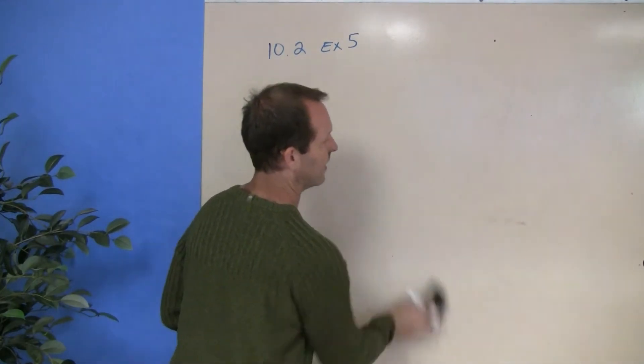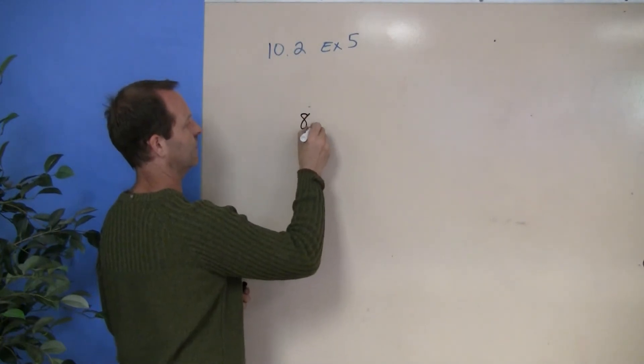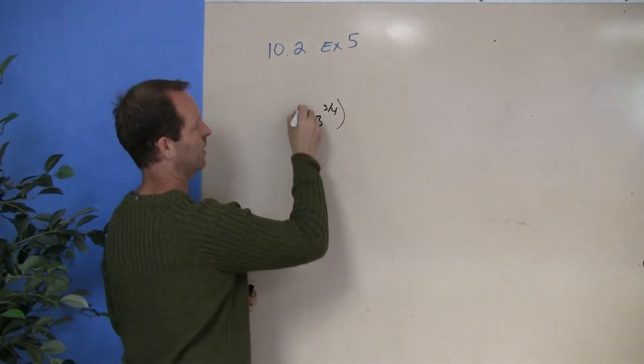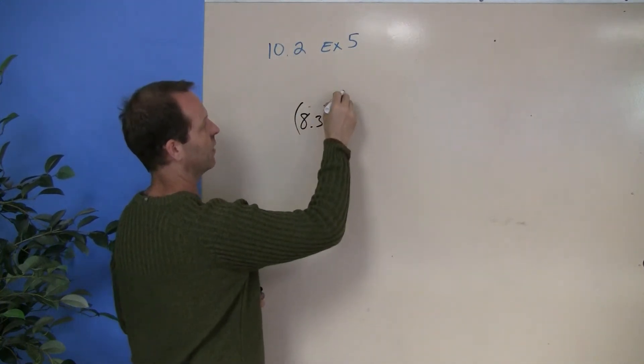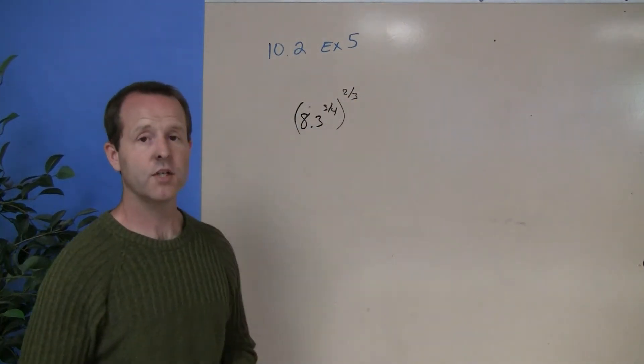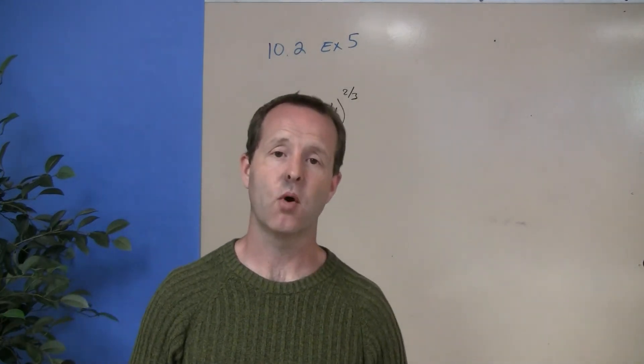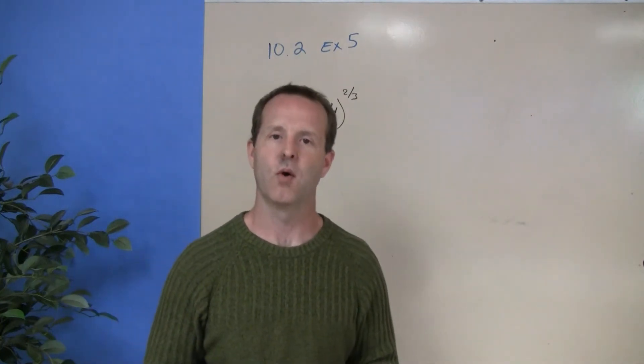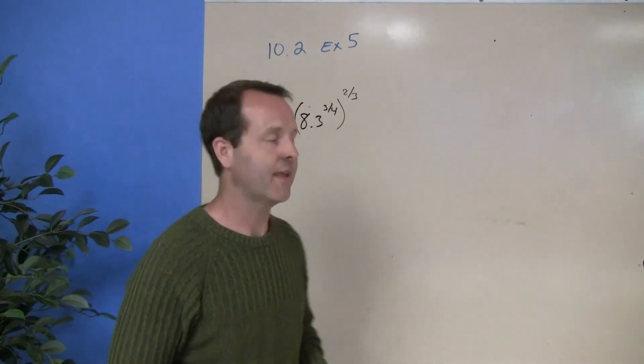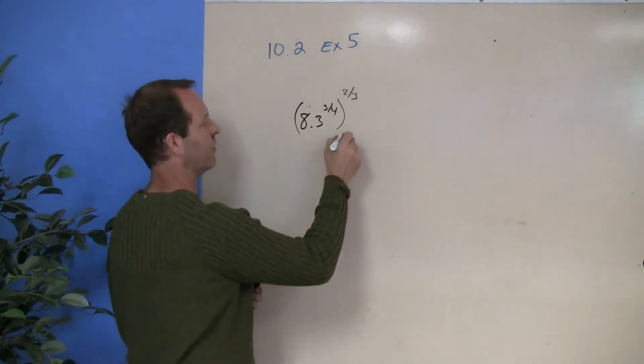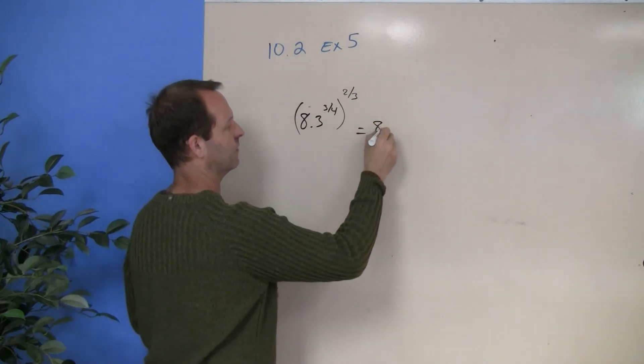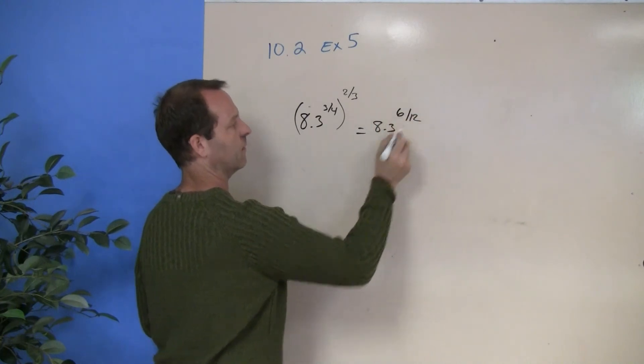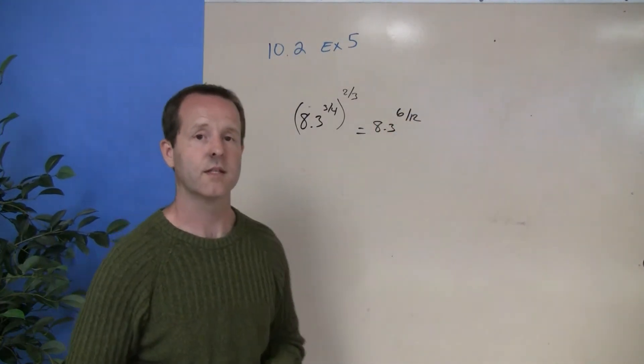Okay, let's look at 8.3 to the 3/4ths and that entire thing to the 2/3rds. Well, here we're just multiplying an exponent to an exponent. Or we have a situation where we have an exponent raised to an exponent. In that case, we multiply the exponents. So 8.3 stays. And the exponent becomes 6/12ths. So I'm left with 8.3 to the 6/12ths.